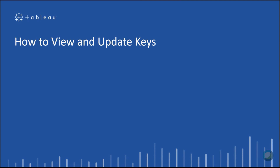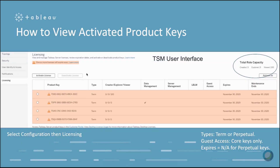Now let's talk about how to look at and update keys on Tableau server. Tableau server comes with an interface called TSM, or Tableau Server Manager. The user interface shows you the total role capacity of all keys activated on Tableau server. In this example, the product keys have an expiration date and are about to expire — you can see a warning colored in orange. If any product keys are about to expire, you'll want to either refresh them or activate new keys in the Tableau customer portal.